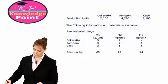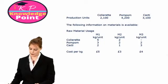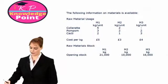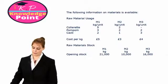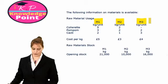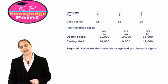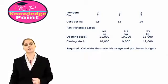We have our three products: the Colorette, the Pom-Pom, and the Cacti, and we now know how many units of each we're going to produce. In addition, we've been provided with information on our materials. This company uses three different materials in its production process: M1, M2, and M3. We're told how much of each material is used in each product — needed for our materials usage budget — plus the cost per kilogram of each material, and our opening and closing stock budgets for each material, which we'll need for the materials purchases budget.